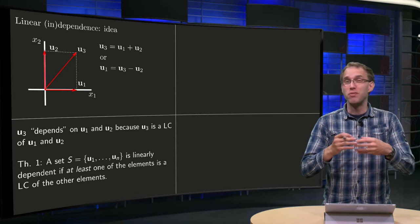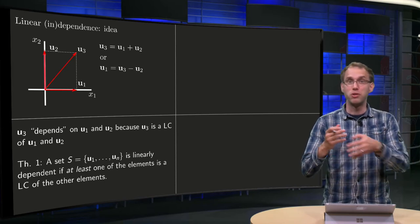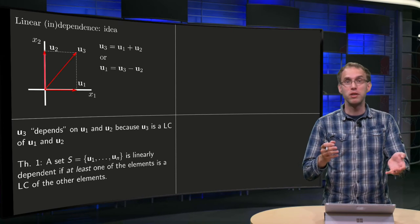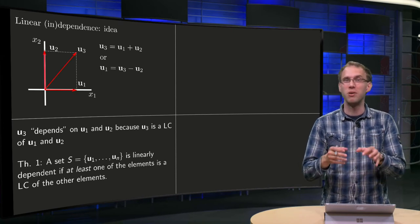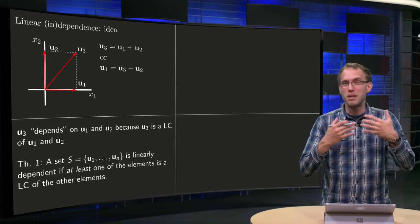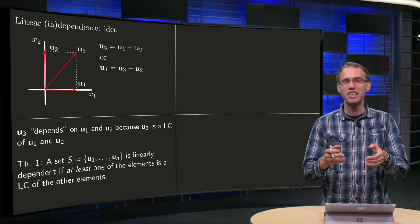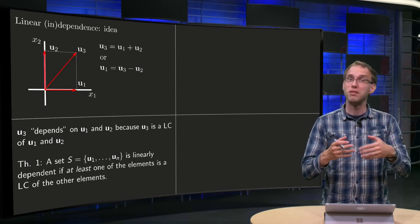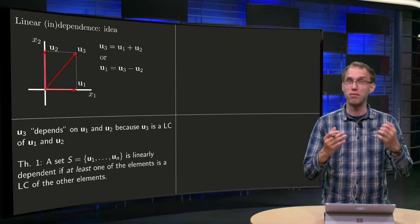However, this is very impractical, because if u3 depends on u1 and u2, maybe u1 depends on u2 and u3, etc., so stating dependence of a vector on others, that's not so convenient, so we often define dependence of a set of vectors.